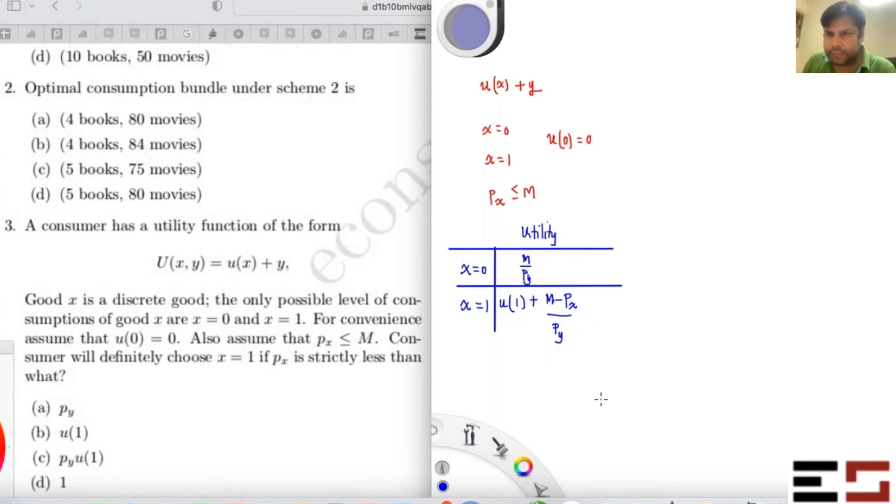So this has to be greater than whatever utility. It has to be greater than this. That's it. So you're going to get u(1) plus M minus P_X upon P_Y should be bigger than M by P_Y.